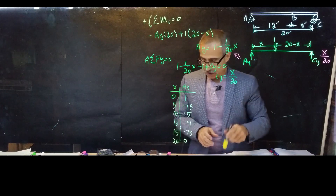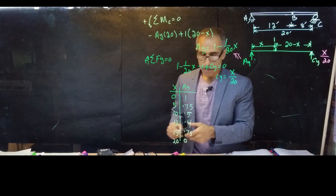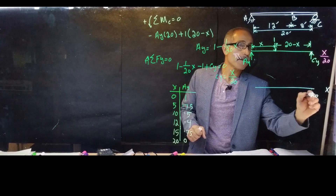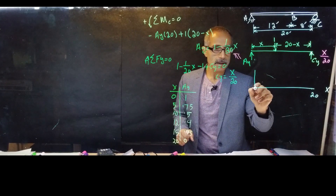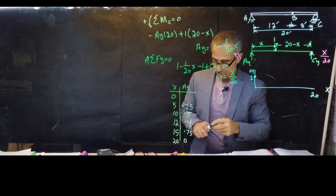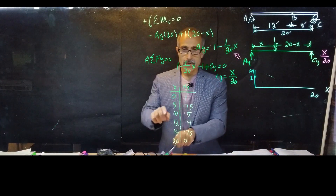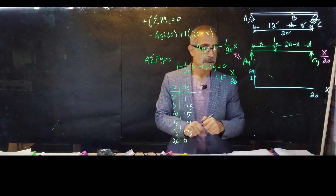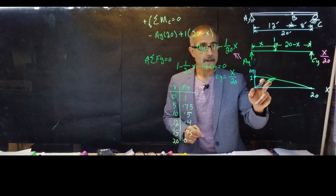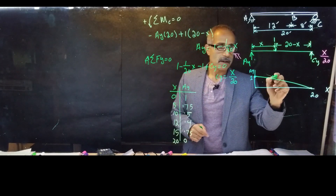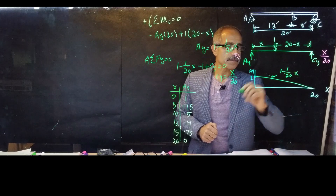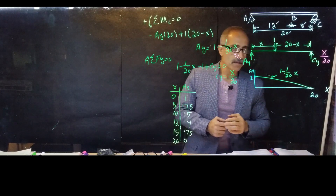Now let's make a graph. The X axis goes to 20, the Y axis is labeled A_Y. At X = 0, A_Y = 1; at X = 20, A_Y = 0. Drawing a straight line between those two points gives us the influence line for reaction force A_Y, described by the equation A_Y = 1 − (1/20)X.